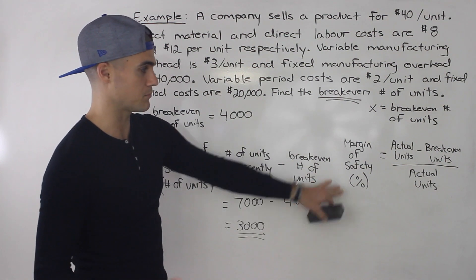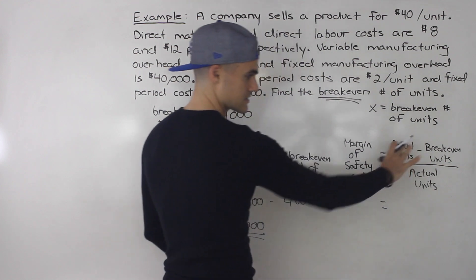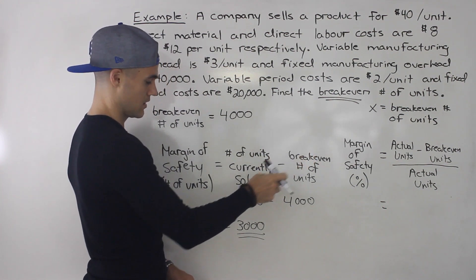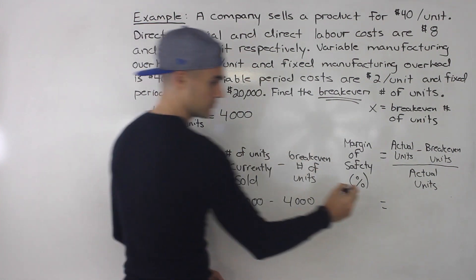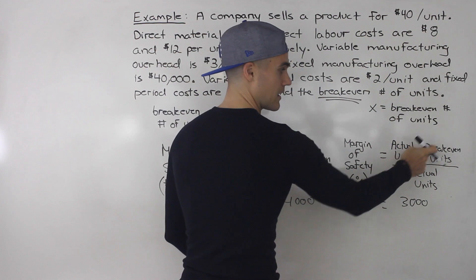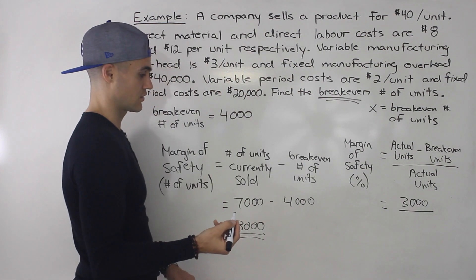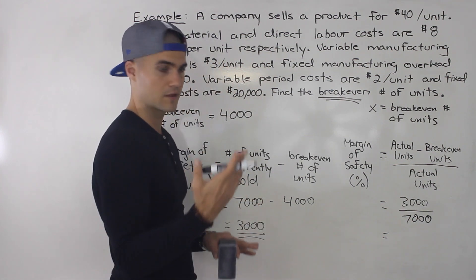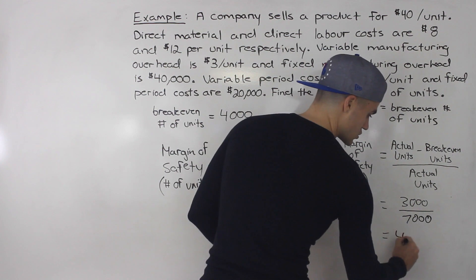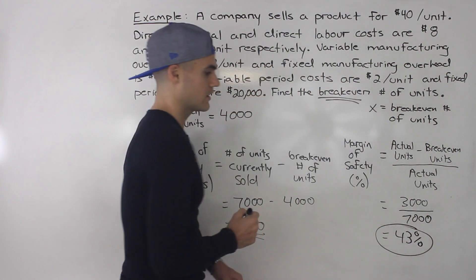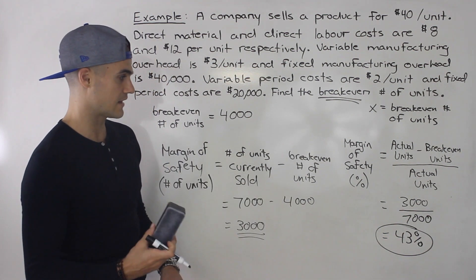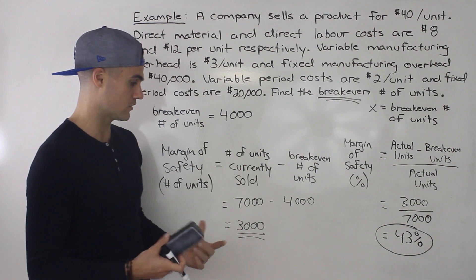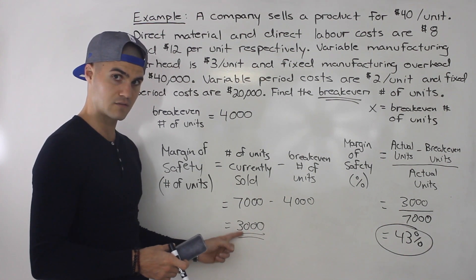Another way to look at margin of safety is as a percentage. The formula is: the actual units sold minus the break-even units, all divided by the actual units currently sold. So that's (7,000 − 4,000) over 7,000, which is 3,000 over 7,000, approximately 0.43, or 43%. That means the number of units sold can drop by 43% before hitting the break-even point — that's your buffer.